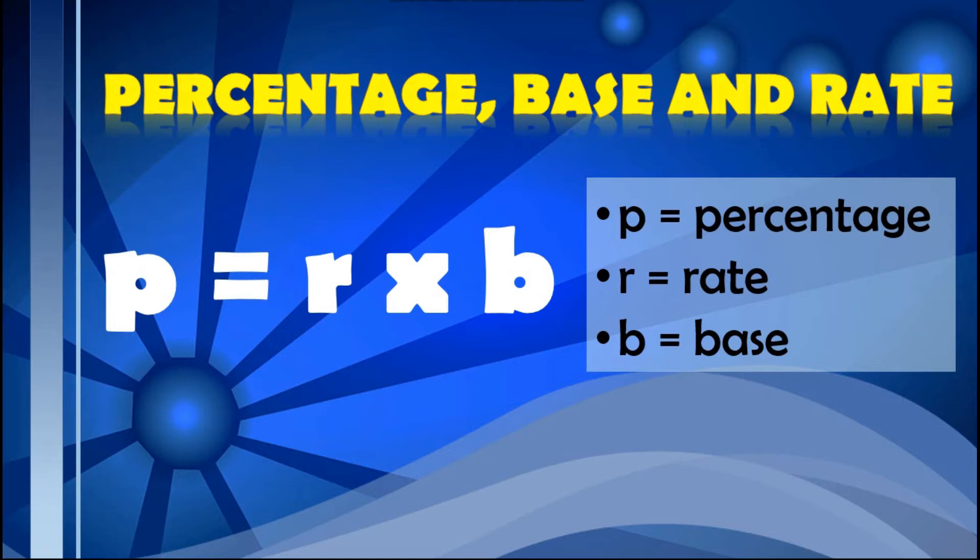When we are talking about computations involving percent, we usually use the formula for percentage, base, and rate. So, we have percentage is equal to the rate times the base. P refers to the percentage, which is the portion or part of the whole indicated by the percent. R refers to rate, usually written in percent, decimal, or fraction form. And B refers to base, which is the size of the whole.